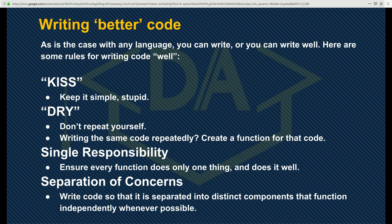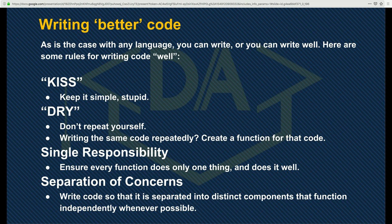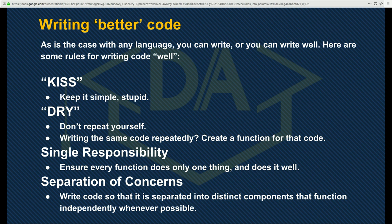Single responsibility means ensuring every function only does one thing and does it well. The bigger the project, the more you benefit from doing that, because you're able to test individual functions. If something's not working on your site, you can test each function — which has only one responsibility — and see if it's behaving as expected. Whereas if you have a single function doing ten things, you can't really test those ten things individually.